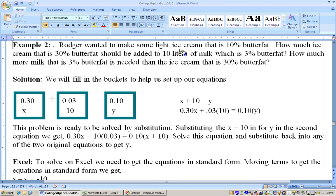Okay, on example two, it says Roger wanted to make some light ice cream that is 10% butterfat. How much ice cream that is 30% butterfat should be added to 10 liters of milk, which is 3% butterfat? And it also asks how much more milk that is 3% butterfat is needed than the ice cream that is 30% butterfat. Well, let's answer the first question first here. He wants to make some ice cream that's 10% butterfat. So that's what he wants to end up with, and it doesn't tell you how much he's going to end up with. It says how much ice cream that is 30% butterfat. Well, we don't know how much. We call that X. The percentage is 30%. It needs to be added to 10 liters of milk, which is 3% butterfat. So that's 0.03 right there.